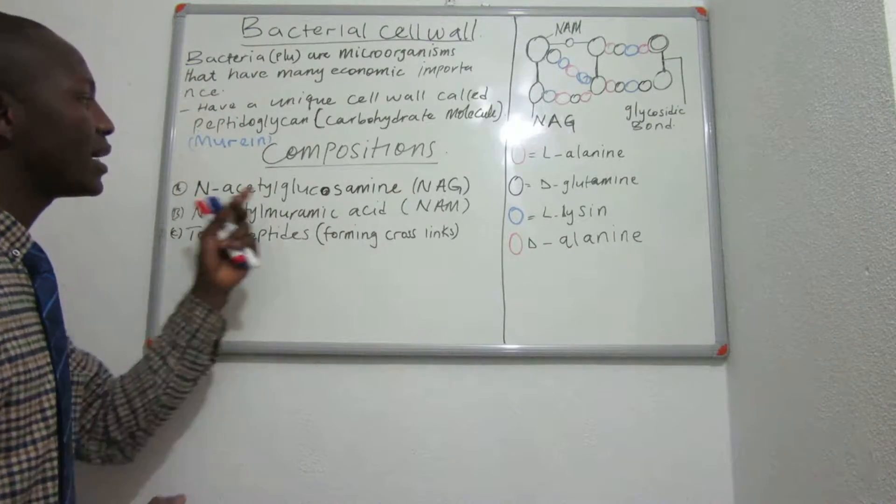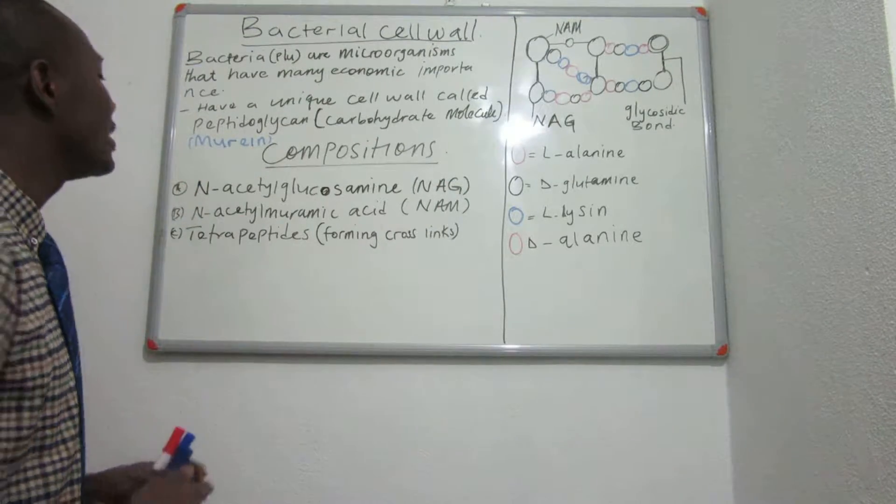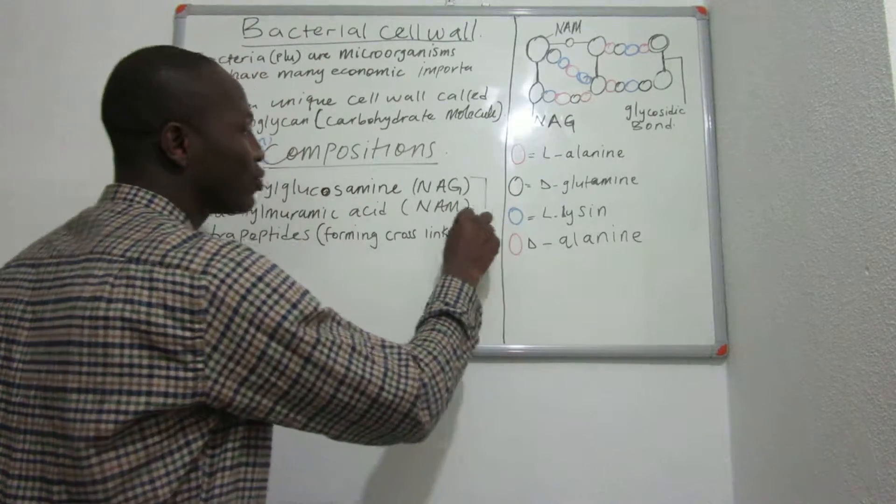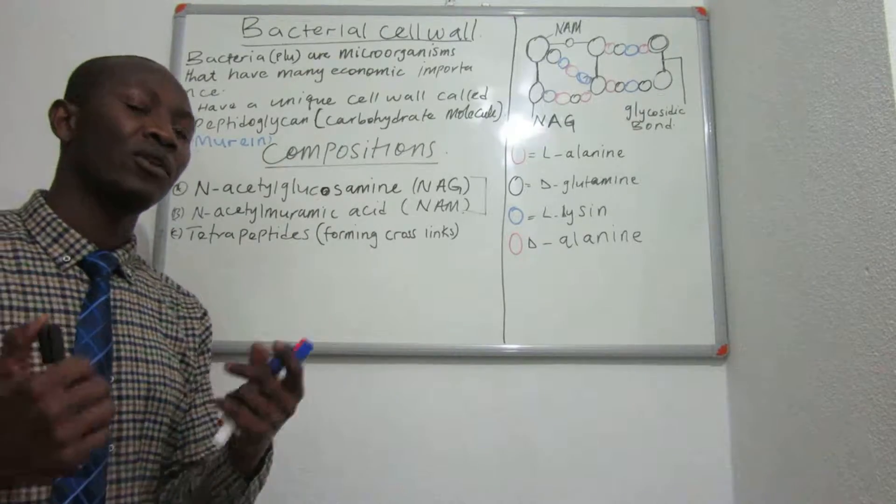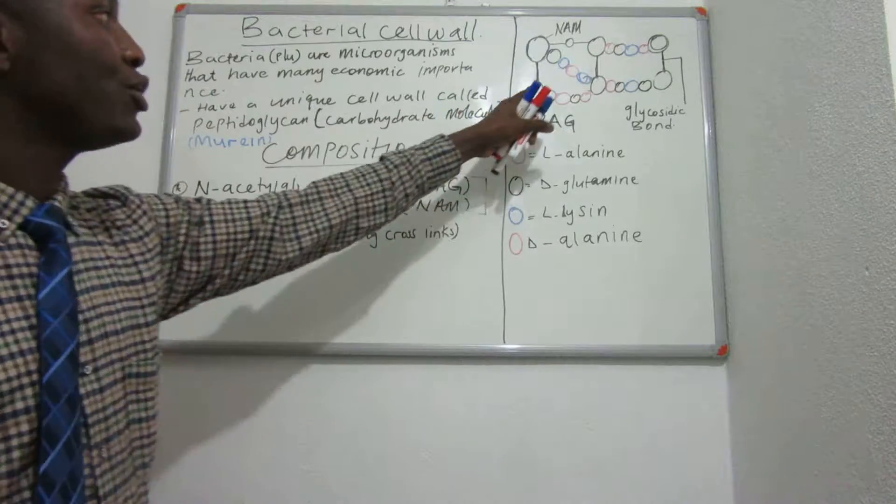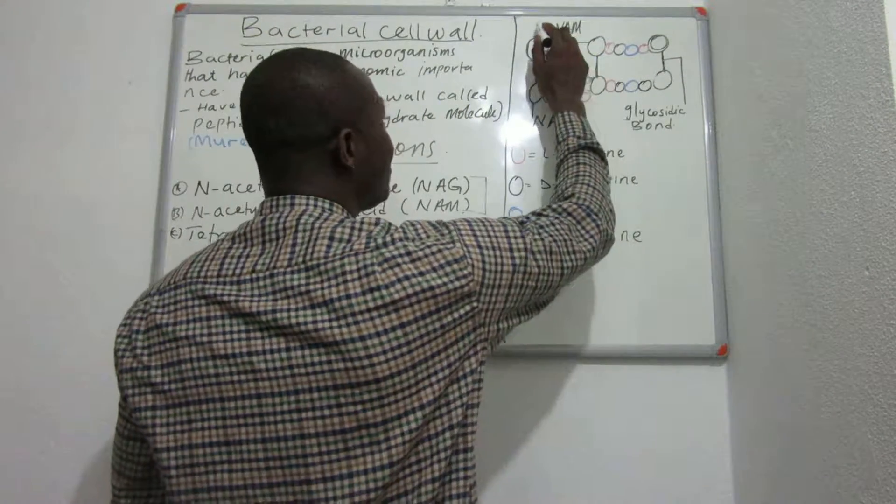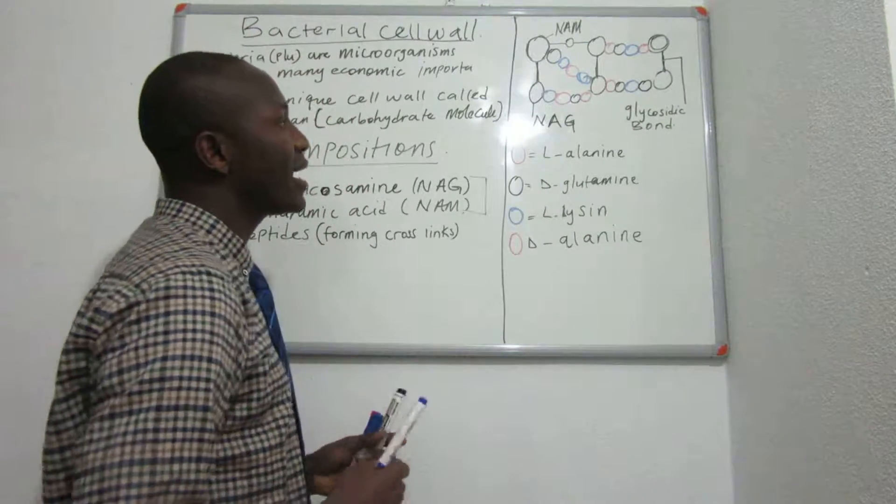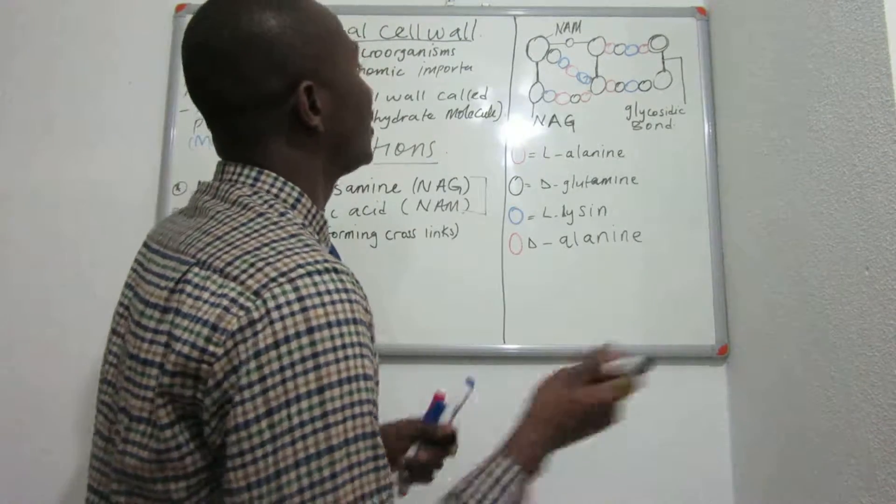These two sugar molecules are called the NAC and the NAM, that is the N-acetyl glucosamine and N-acetyl muramic acids. These two are sugar molecules and there is a tetrapeptide that forms cross-links between these two sugar molecules. This is the NAM, the N-acetyl muramic acid, and this is the N-acetyl glucosamine.